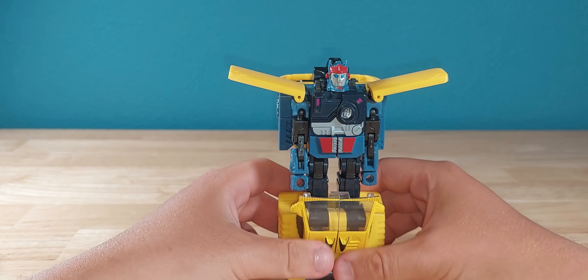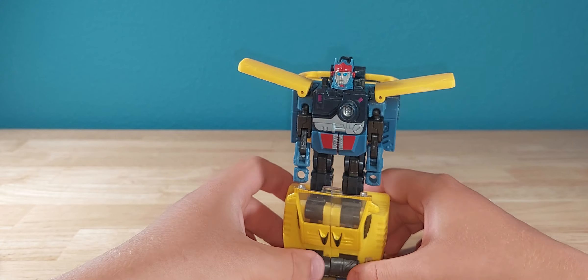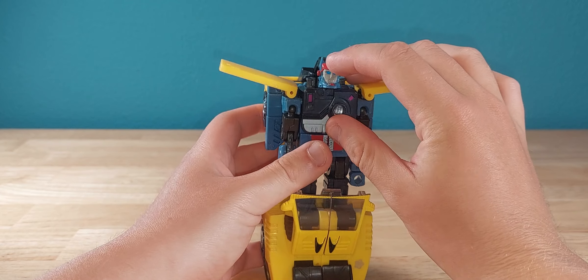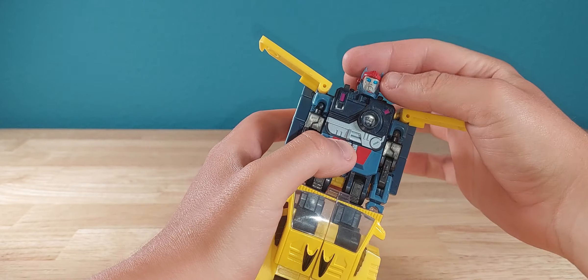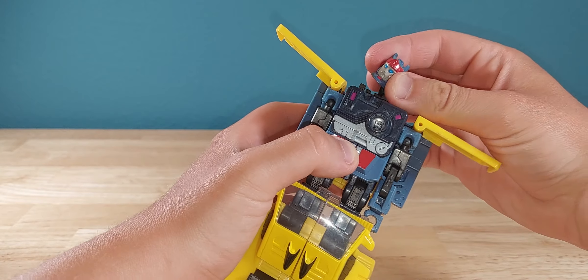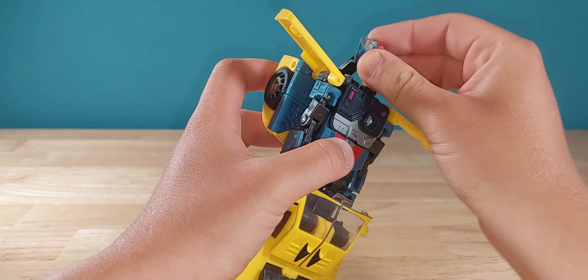And here we have him in robot mode, and overall not too bad, looks very nice. So yeah, for articulation in robot mode, his head is on an armature so it's kind of weird. He can't really look left or right unless you just unhook it, then he can do all sorts of exorcism things.